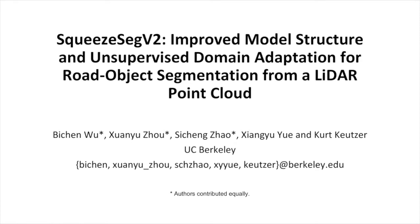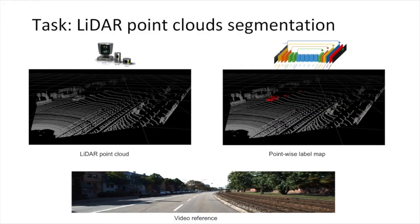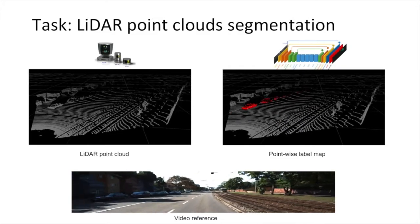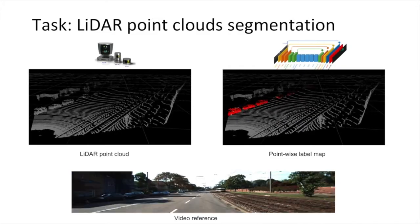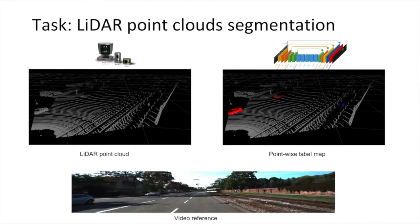This is SqueezeSeg v2: Improved Model Structure and Unsupervised Domain Adaptation for Road Object Segmentation from the LiDAR point cloud. Our task is, for a given LiDAR point cloud, we want to segment the object of interest.